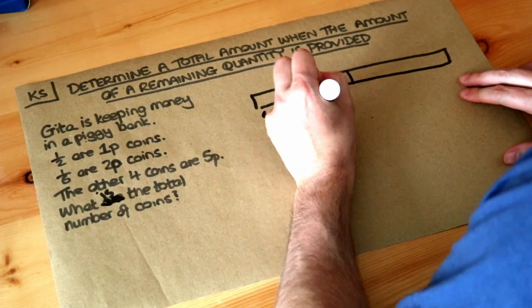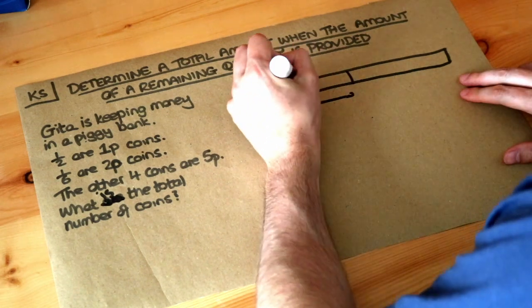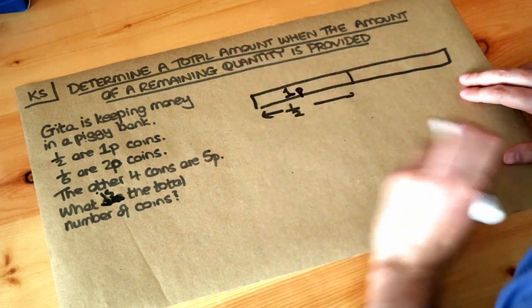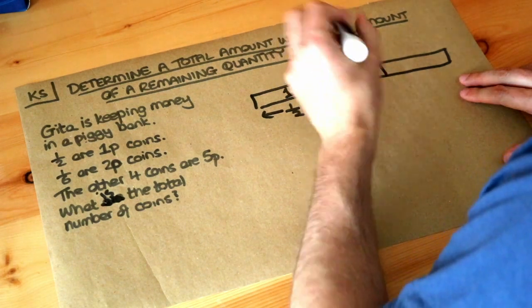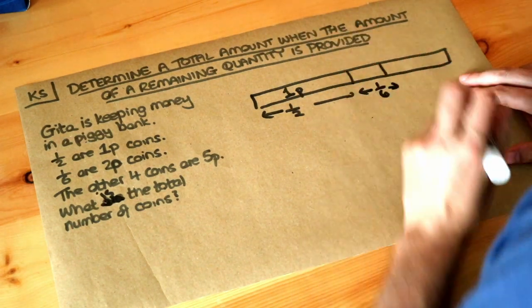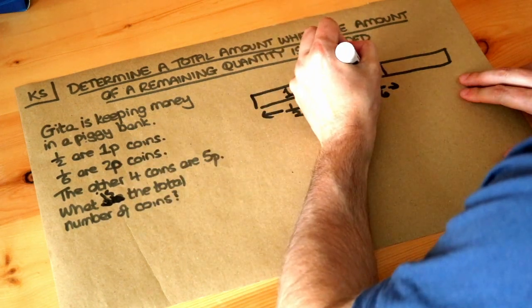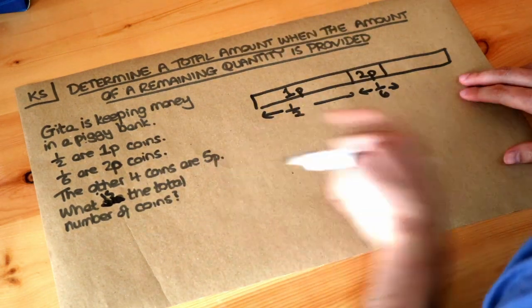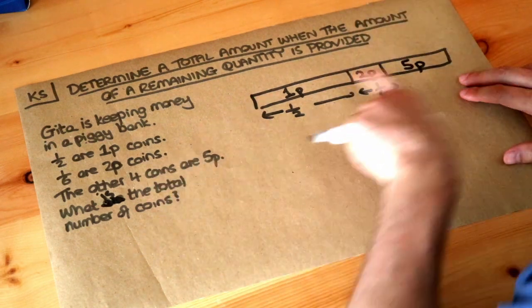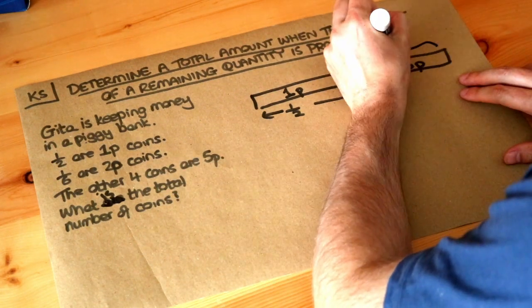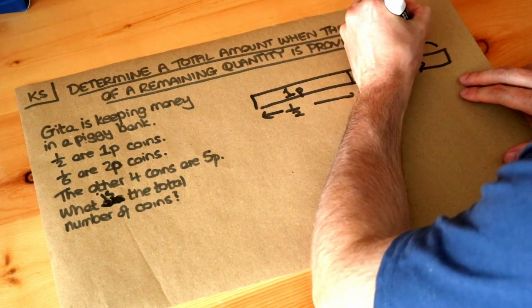So half the coins we know are 1p and then an additional sixth of the coins, so about this, a sixth of the coins are 2p. And then we know the remaining coins are 5p and we're told that there's four coins here. That represents all the information in the question.